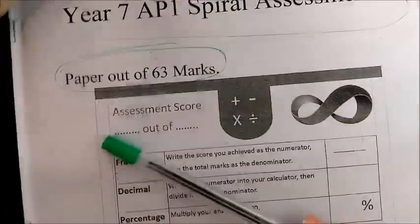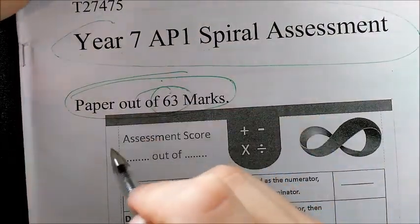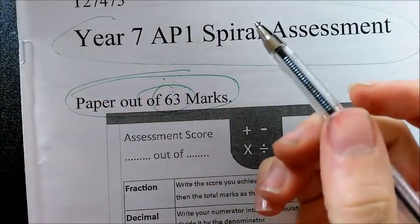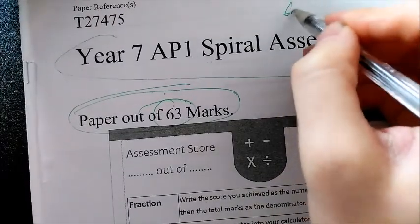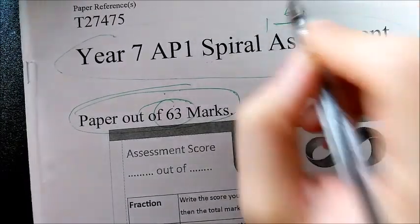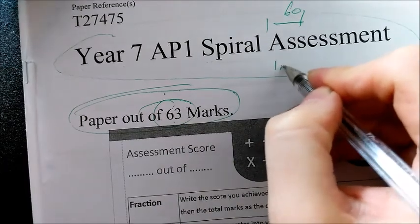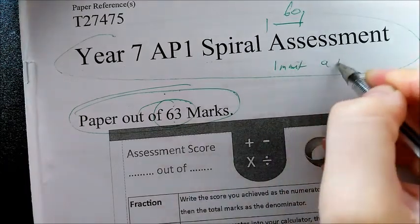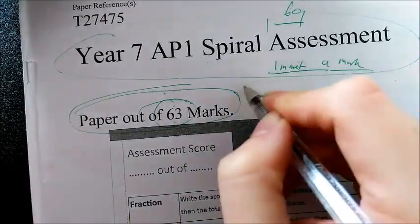Thirdly, just a bit of exam technique. If I was having a look at this, it says this paper is out of 63 marks. 63 marks and I got about 60 minutes in my lesson. What does that mean? That means I need to be spending about a minute a mark in the test.